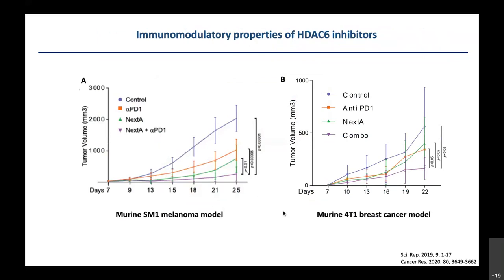We have published papers showing that HDAC6 inhibition actually possesses significant immunomodulatory effects rather than cytotoxic effects. We demonstrated this activity using the SM1 murine melanoma model as well as a murine 4T1 triple-negative breast cancer model. These are syngeneic mouse models, which retain the active immune system and are therefore good models to study immunotherapy. When we used Nexturastat in combination with anti-PD-1 therapy for both SM1 murine melanoma and the 4T1 cancer model, the combination therapy significantly suppresses tumor growth compared to single-arm therapies.